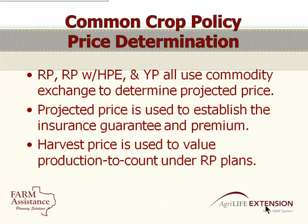One of the things they changed with the new policies is price determination. All of them now use the same commodity exchange and time period to set the price. Used to be APH was set in a black box, and CRC was set during a period on the exchange — either the CME for livestock, Chicago Board of Trade for corn and soybeans, or the New York exchange for cotton. All use the same period now, and the harvest price determined at end of year is used to calculate production-to-count on revenue claims.